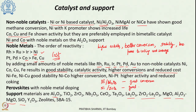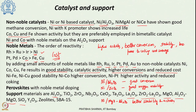Nickel on a zirconia support has good oxygen mobility. Nickel combined with magnesium oxide and alumina shows better stability as well as activity. Noble metal-based catalysts such as rhodium on alumina show lower coke deposition. There are various combinations of catalyst and support that can provide good performance in terms of activity, selectivity, conversion, and reduced coking and sintering.